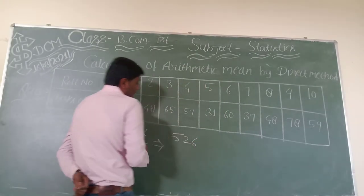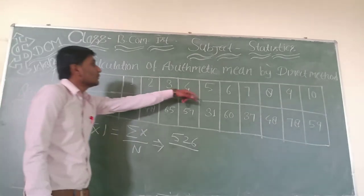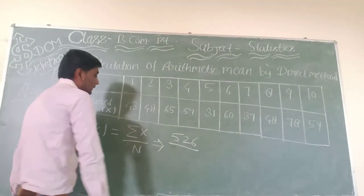And N is the total number of terms. Counting here: 1, 2, 3, 4, 5, 6, 7, 8, 9, 10. So N equals 10.